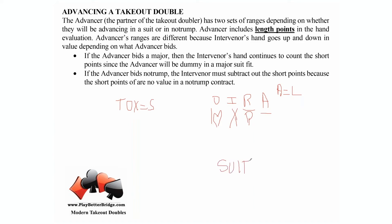They have three different ranges for suit contracts. If advancer looks at their hand and decides they're bidding no trump, they have another separate type of ranges. You need to know what you're bidding before you know which range you're using.